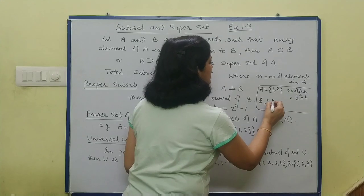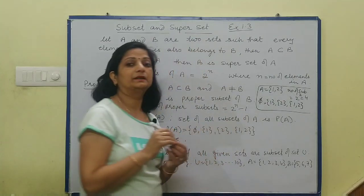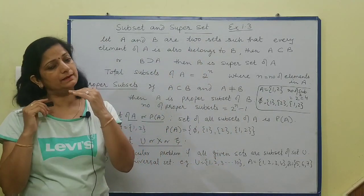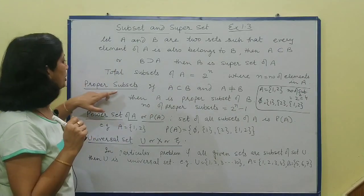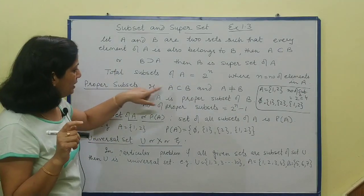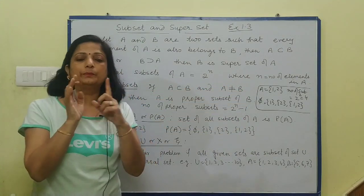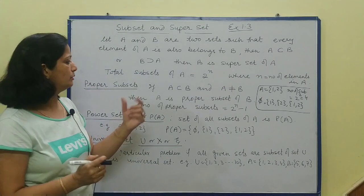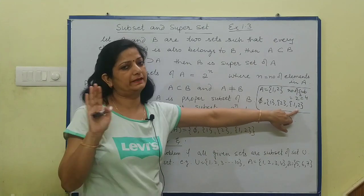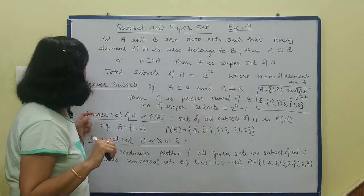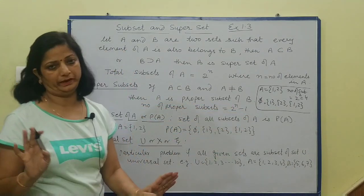कौन-कौन से subsets होंगे? Empty set हर किसी का subset होता है। Empty set के बाद single-single आप form कर दीजिए और उसके बाद complete set भी अपने आपका subset कहलाता है, लेकिन वो proper subset नहीं होगा। If A is subset of B and A is not equal to B, तो proper subsets find करने के लिए total subsets में से एक minus करना होगा — यानि 2 to the power n minus 1.